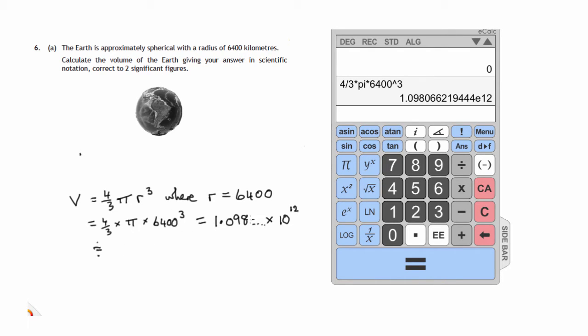1.098 and so on, and this little e stands for times 10 to the power, and there's a 12 for the index. So that's it in scientific notation. Approximately we want two significant figures: that's one and this zero is the second one, but we're chopping a nine off so that zero would go up to one. So it's 1.1, that's the two significant figures, times 10 to the power 12, and it's a volume so it's in kilometres cubed. So that's our answer to part A.